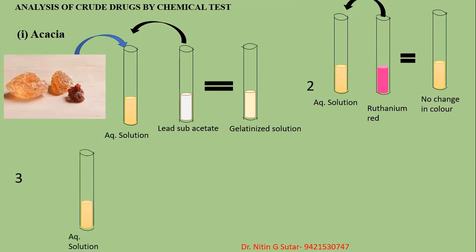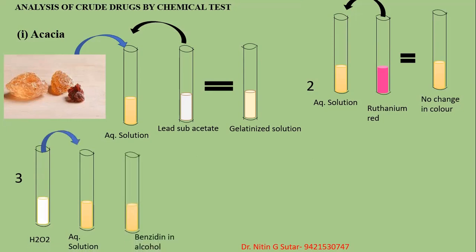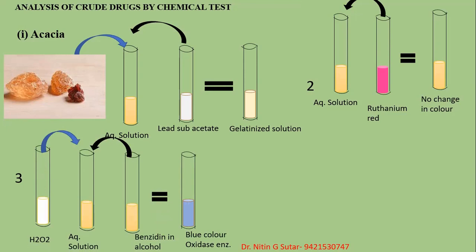The third test: take the aqueous solution of acacia, add hydrogen peroxide solution and 0.5 ml of benzidine in alcohol. You get a blue color. This blue color is because of the oxidase enzyme, where an oxidation reaction is carried out, and the blue color formation is produced.